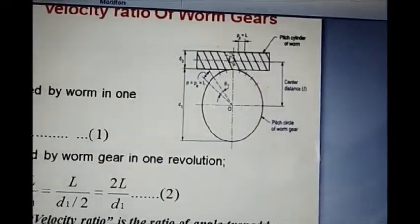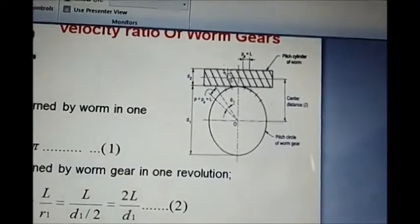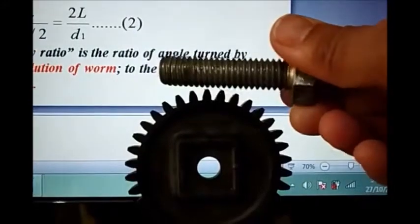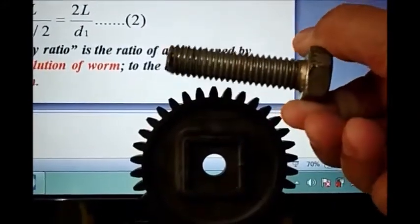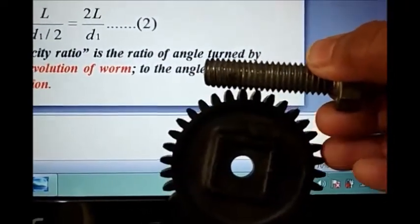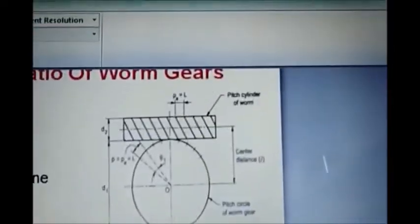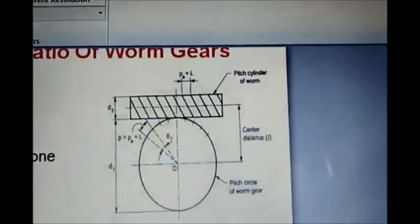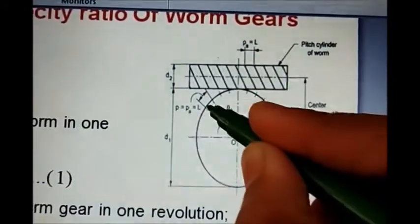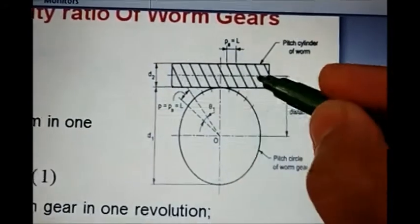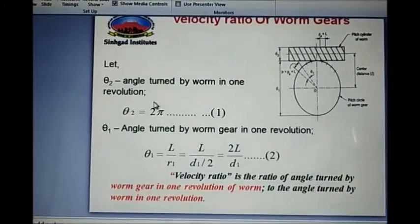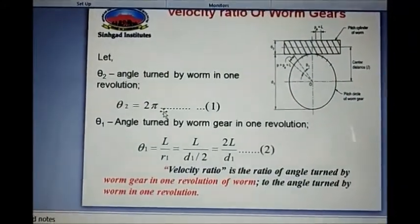As you can see in this figure, the angle turned by the worm in one revolution is 2π, that is 360 degrees. The angle turned by the worm gear — theta 1 — corresponds to traveling the lead distance when the worm completes one full revolution.